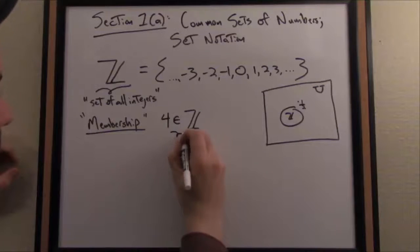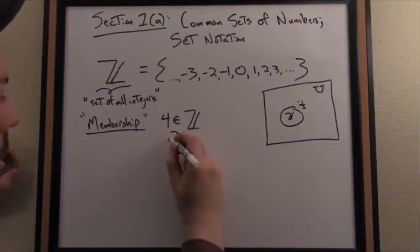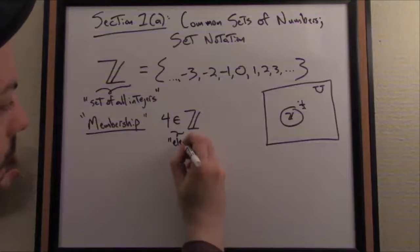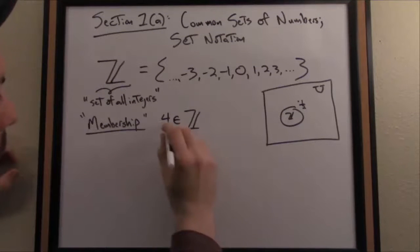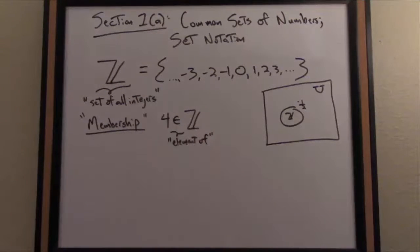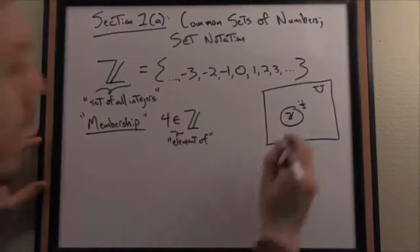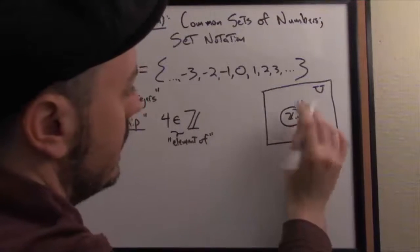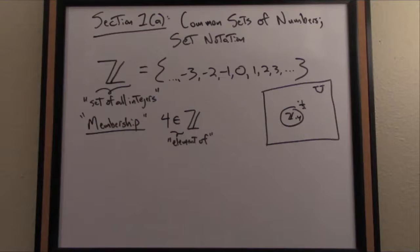Epsilon here, with relation to sets, just means 'is an element of.' You can read that as four is an element of the integers, or four is contained within the integers. Sure enough, four is in the integers. That's in the bubble somewhere in my Venn diagram.